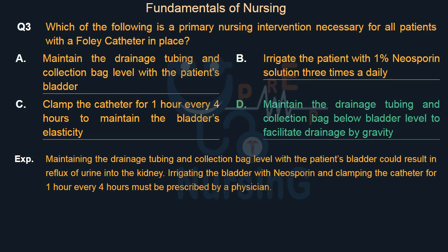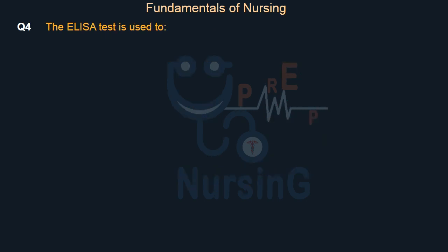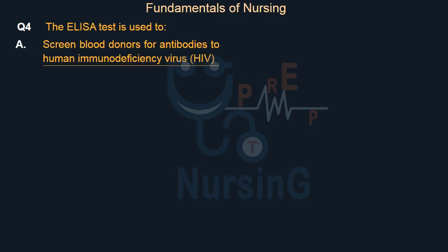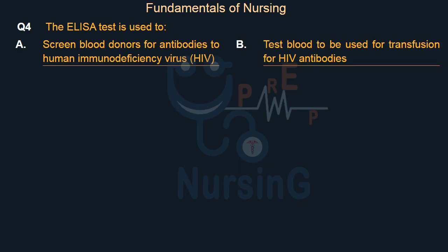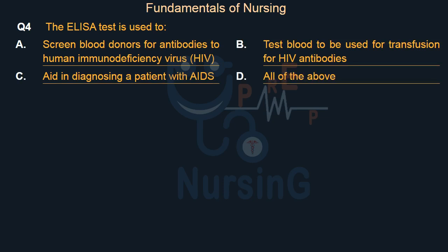The ELISA test is used to: Option A: Screen blood donors for antibodies to human immunodeficiency virus (HIV). Option B: Test blood to be used for transfusion for HIV antibodies. Option C: Aid in diagnosing a patient with AIDS. Option D: All of the above.